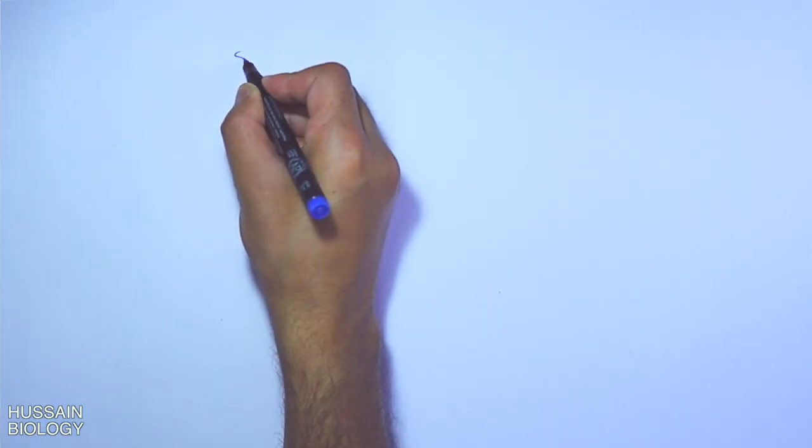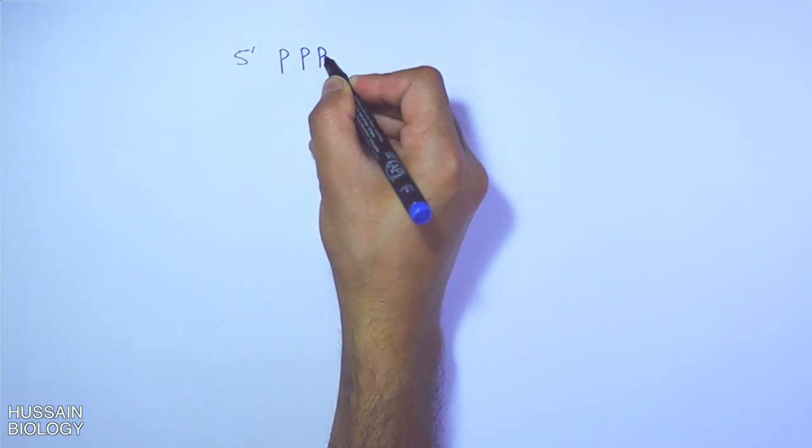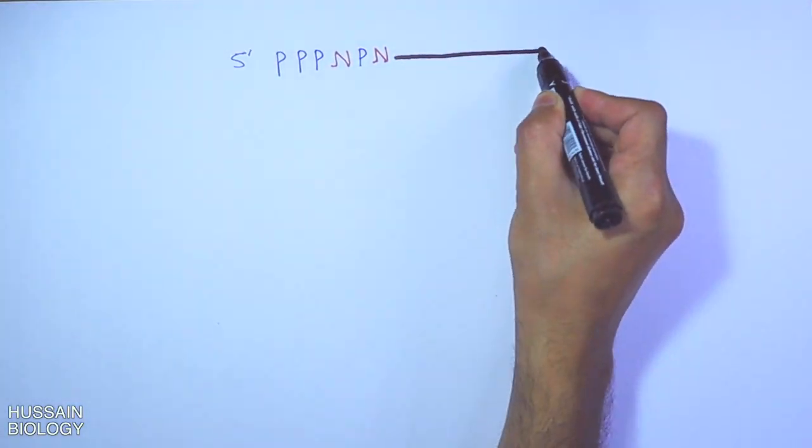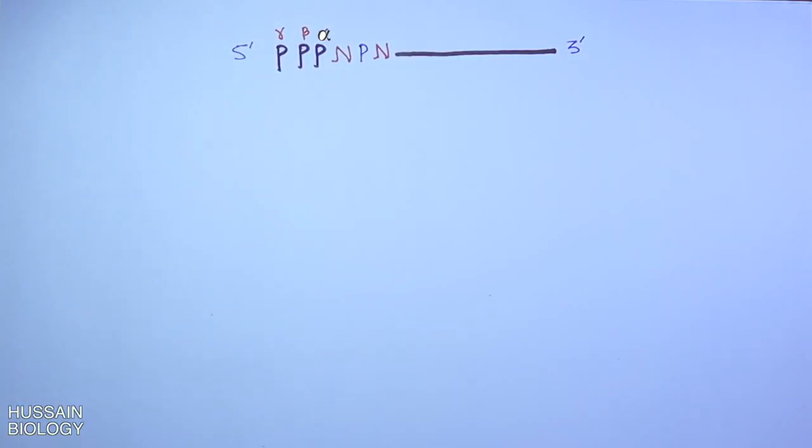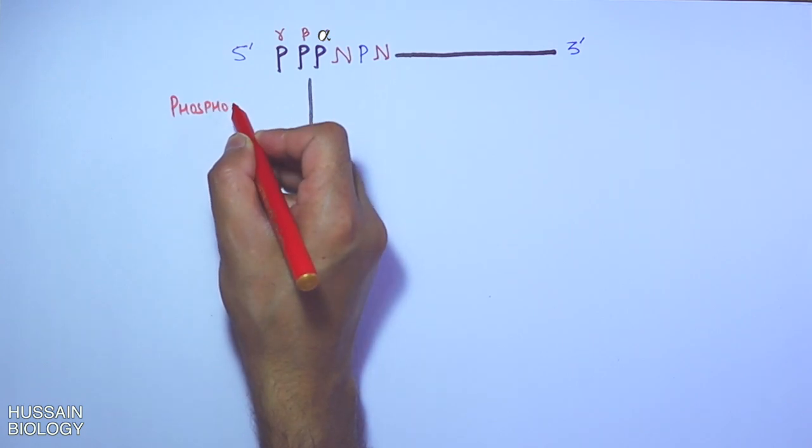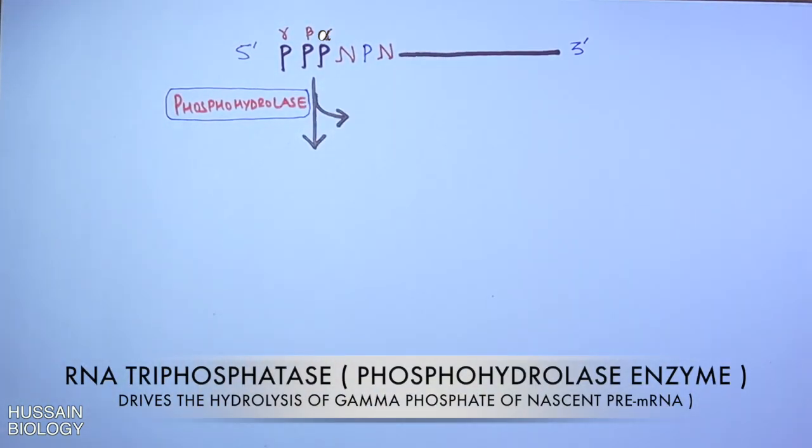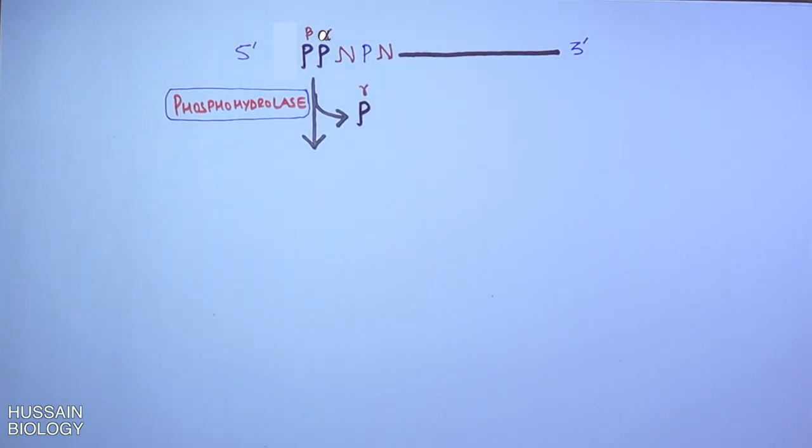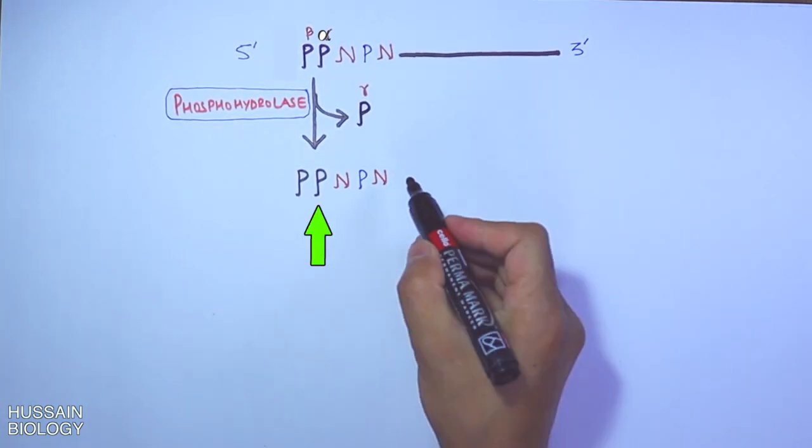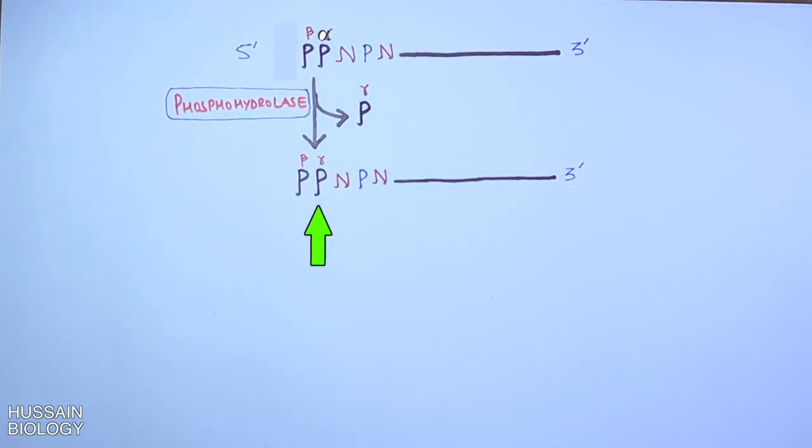Now if we see the structure of the mRNA molecule, at the 5 prime end we have three phosphates: alpha phosphate, beta, and gamma phosphate, then we have nitrogenous bases with sugars and phosphates repeatedly. To start the capping process we have an enzyme called phosphohydrolase. This enzyme works on the 5 prime end of the mRNA molecule and removes the terminal gamma phosphate as shown in the diagram, giving us a structure with only two phosphates.